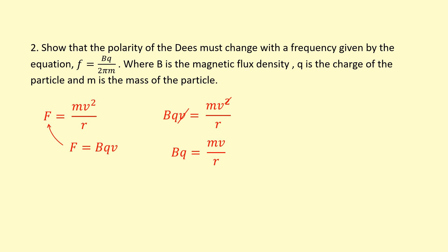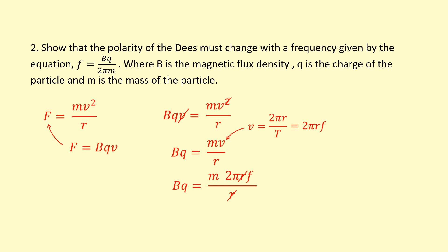To get frequency into this equation, instead of velocity I'll replace it using the circular motion relation: velocity = 2πrf, since 1/T = f. Substituting v = 2πrf in, the r's cancel out. Rearranging, bringing 2πm to the left-hand side, I end up with f = bq / 2πm — the frequency at which the alternating power supply must change polarity so the proton accelerates every time it crosses the gap.